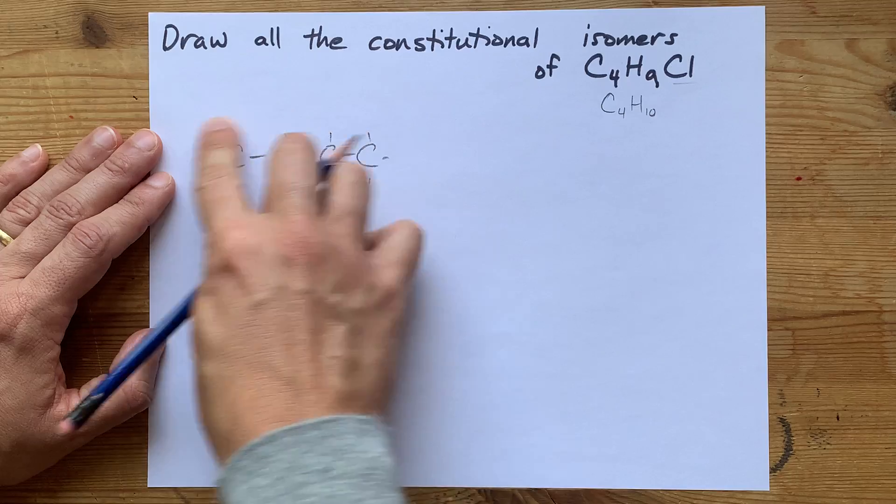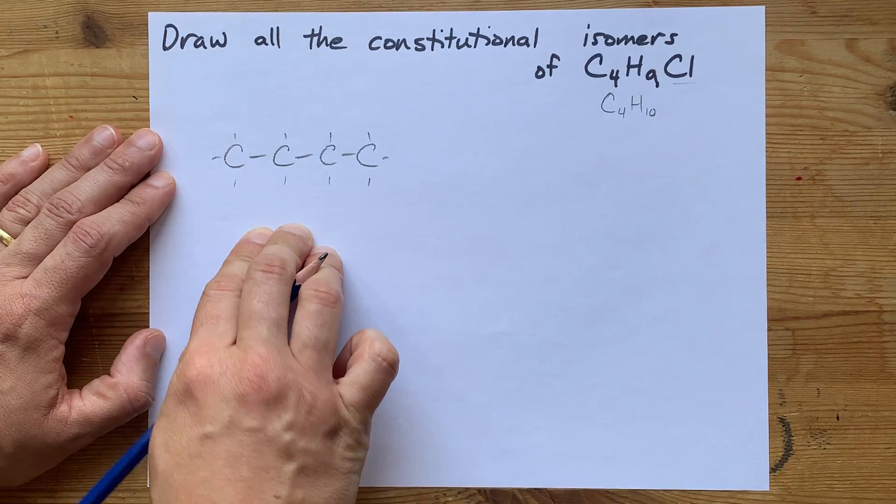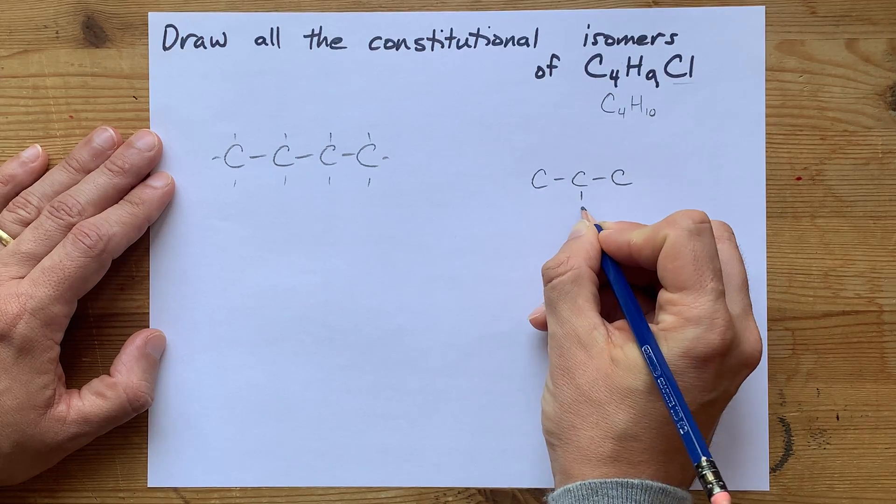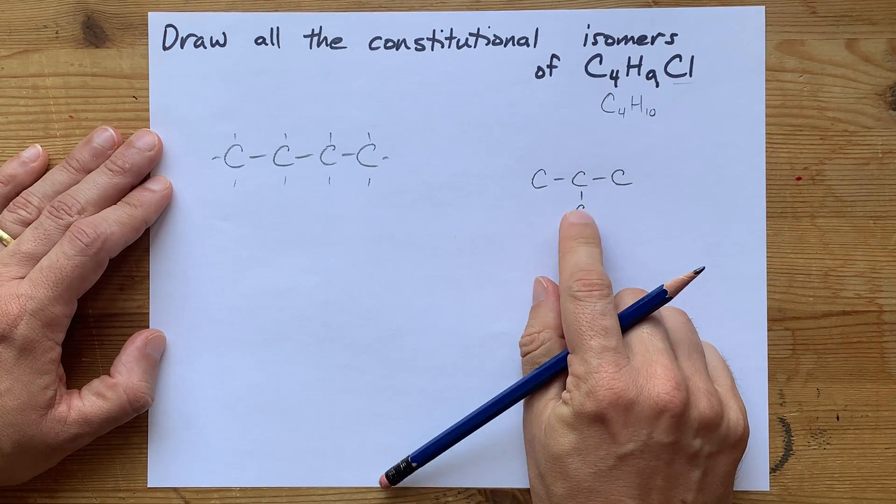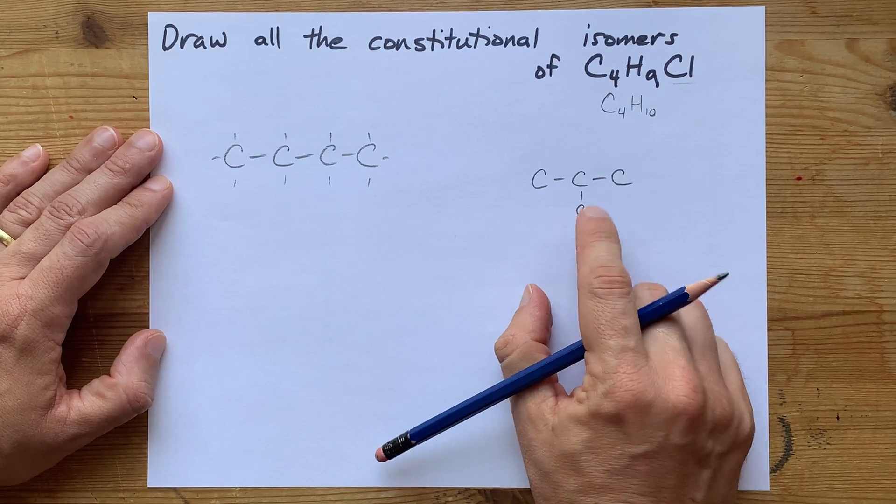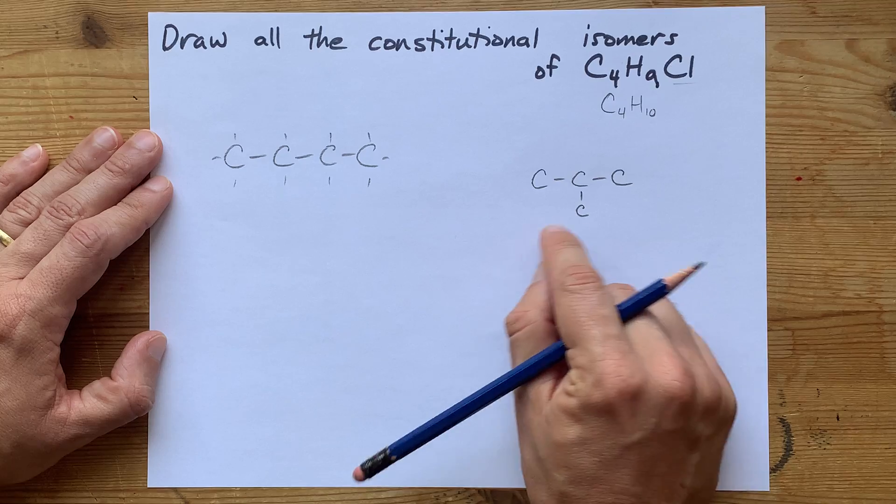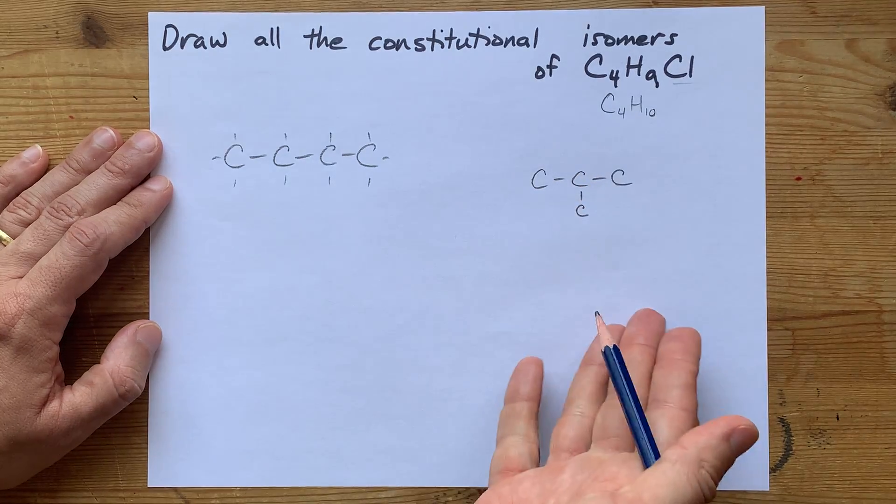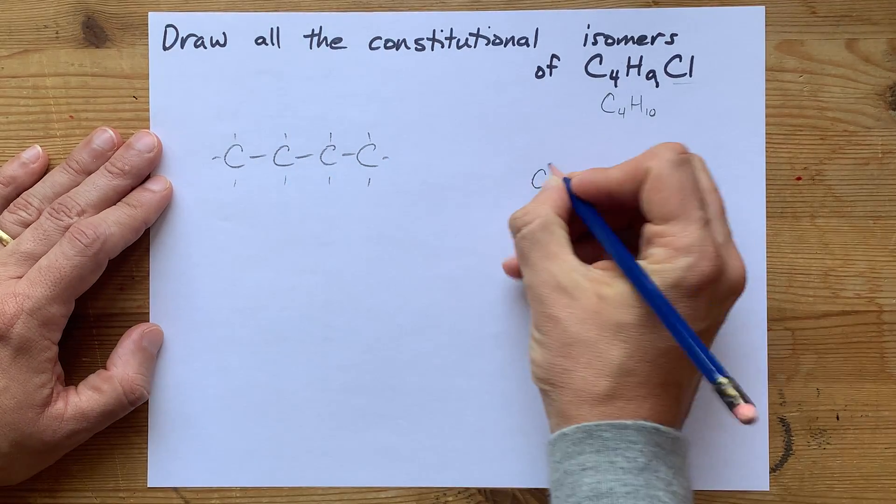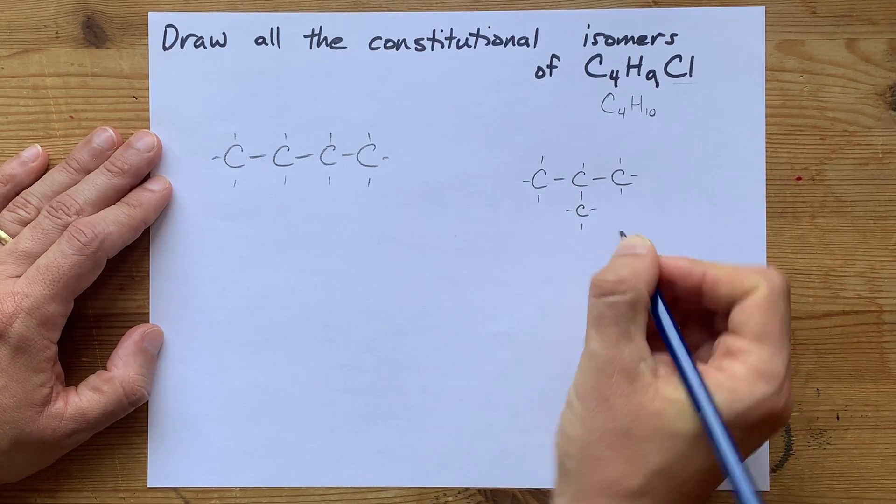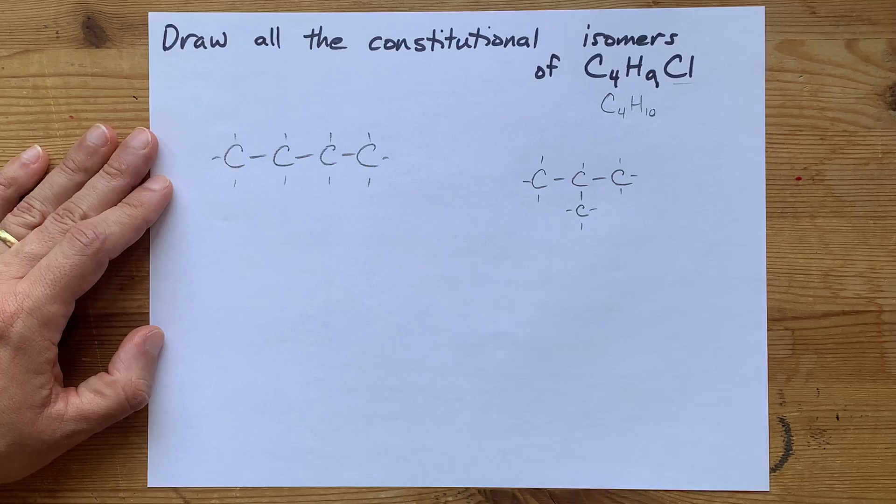The only other way we could connect four carbons all single bonded is to have three in a row and then a single carbon chain coming off the middle. If that single carbon chain was, in theory, coming off the end, then actually your chain is just four long and you're back to this molecule here. So these are the only two different connectivities that your carbon backbone can have.